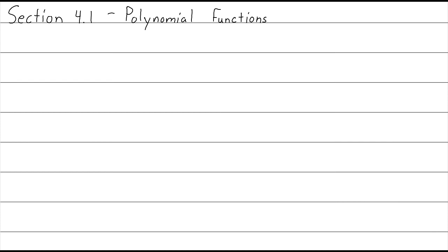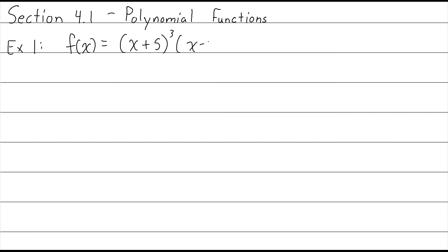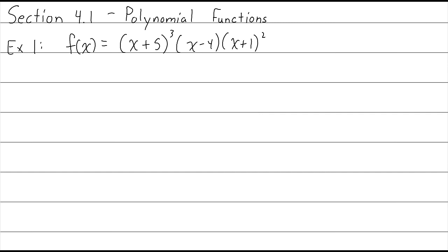Let's start off with an example to explain some concepts. We want to find the zeros of this function, and it will be factored for us already. When you're finding the zeros, you're trying to find the numbers that, when you plug them into the function, you get zero out. That's what a zero is. To find them, you take the function and set it equal to zero and solve it using any of the methods that you know.